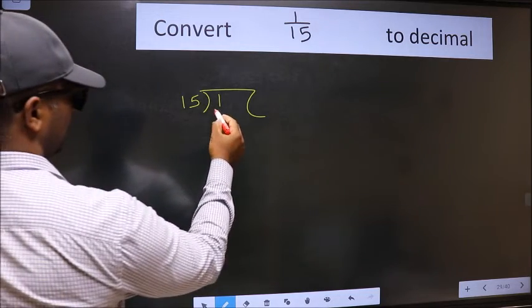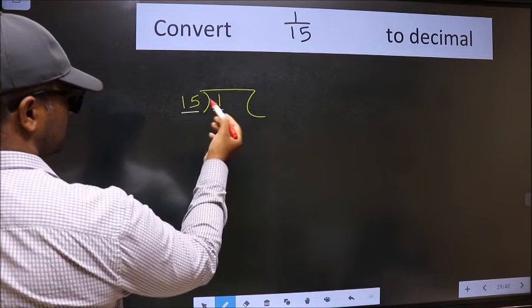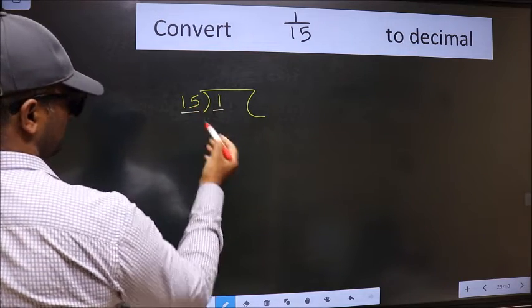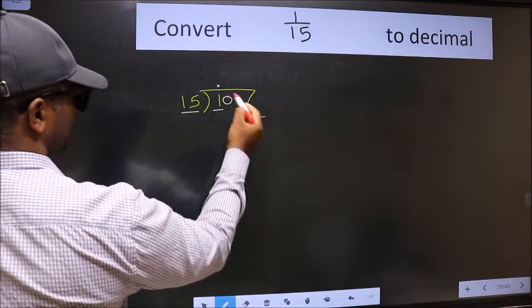Here we have 1, and here 15. 1 is smaller than 15. So what we should do is, we should put dot and take 0.